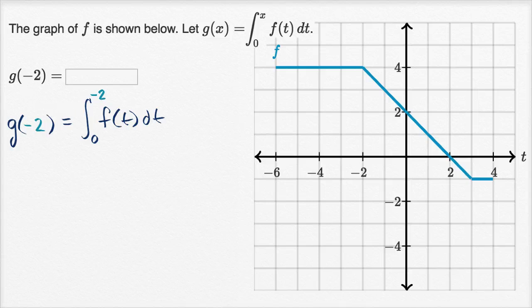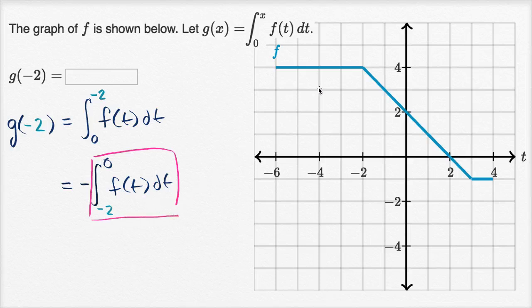And so when you swap the bounds, this is going to be equal to negative definite integral from negative two to zero of f of t dt. And now what we have right over here, what I'm squaring off in magenta, this is the area under the curve f between negative two and zero.